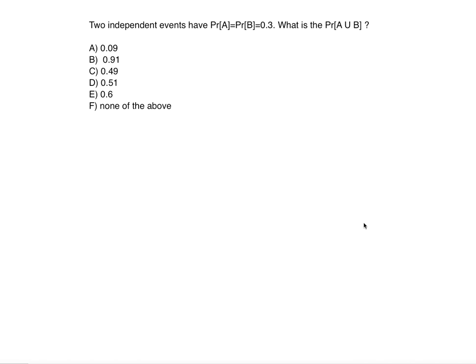In this problem we're going to talk about how to use independent events to calculate the probability of A union B. We're given that two independent events have probability of A and probability of B both equal to 0.3. Since it says they are independent events, we need to find the probability of A union B.